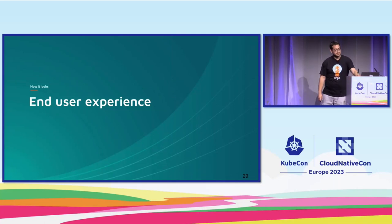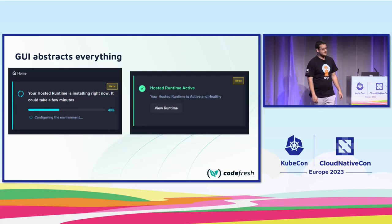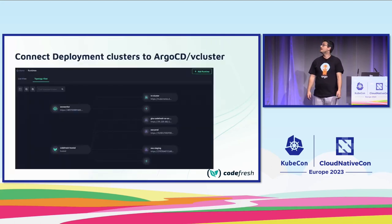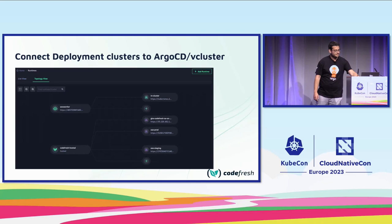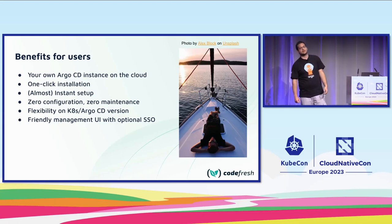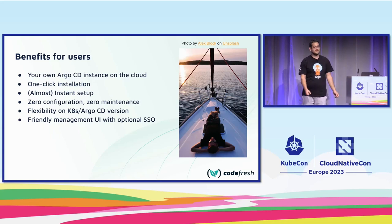How does the end-user experience look? A user goes into our UI, clicks 'Install Hosted Runtime', and sees a progress bar. Once done, they see the hosted runtime is active and can see its components. Once target clusters are connected, they can create Argo applications and sync resources to their clusters. The benefits for users are one-click installation, zero configuration, zero toil, and flexibility in managing multiple Argo CD and Kubernetes versions.